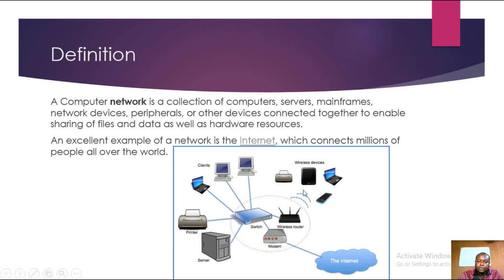This diagram shows a local area network connected to the internet. You can see the clients, which include laptops, desktop computers, printers, and a server. There is also a switch connecting all the devices together, as well as wireless devices on the network connected to the internet.